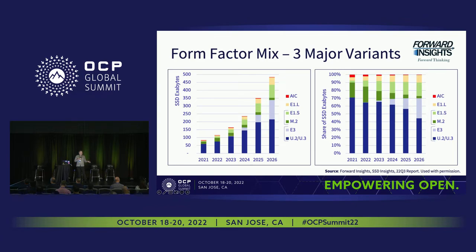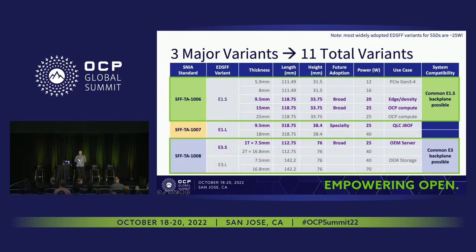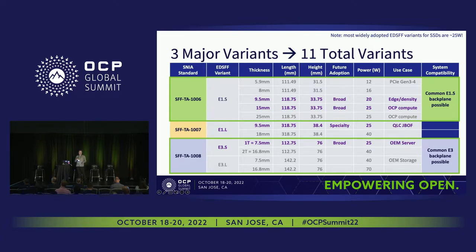We're going from a simple world of two dominant form factors to a very fragmented world: M.2, E1S, E3, U.2, E1L, add-in card. How do you choose? It's actually a little worse than that — there are 11 different total variants of EDSFF to choose from. Smaller data center operators often ask which specific one to pick. I've highlighted in purple the four versions with the most broad adoption, defined by a large count of customers deploying or planning to deploy them in production and a broad array of ecosystem offerings from suppliers.